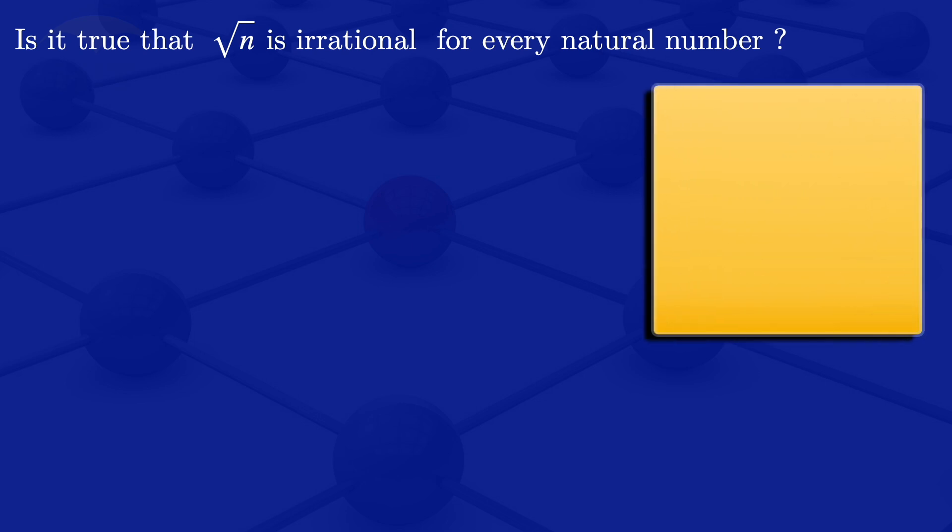We'll start by looking at the definition of a rational number. A rational number is any number that can be written in the form p over q, where p and q are integers, and q is not equal to zero.